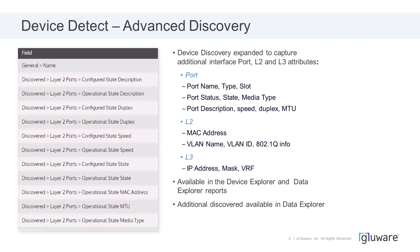Examples include hardware inventories that go into much more detail about port-level information. We have the ability to look at port utilization — whether a port is up or down and if it's available. We can look at address assignment, like what VLANs have been assigned in your network, what IP addressing, masks, and VRFs. This additional discovered data provides a lot of value in the reporting available to you in Data Explorer.